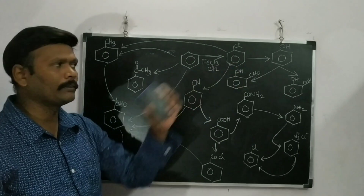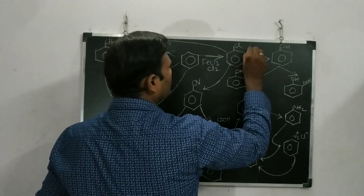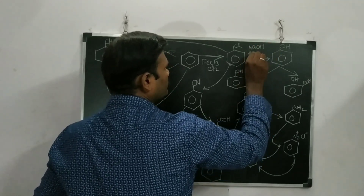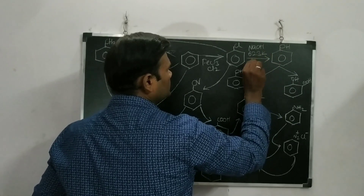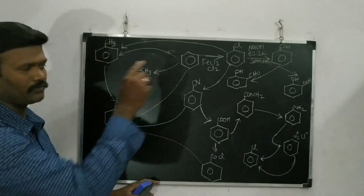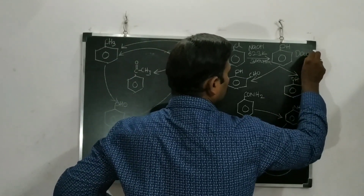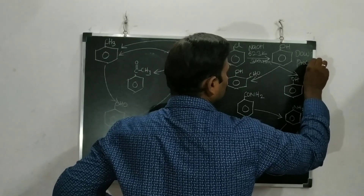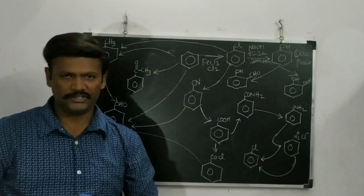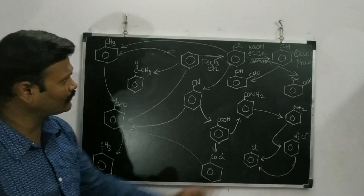Chlorobenzene can be converted into phenol using NaOH at 623 K temperature and 300 atmospheric pressure. This reaction is otherwise called the Dow process — an important naming reaction.